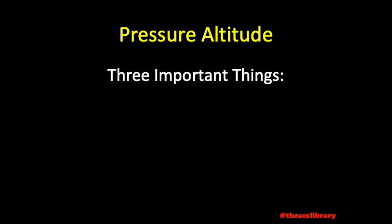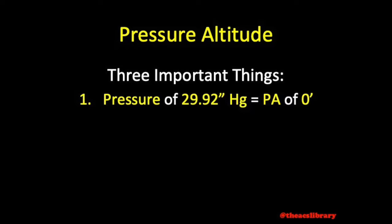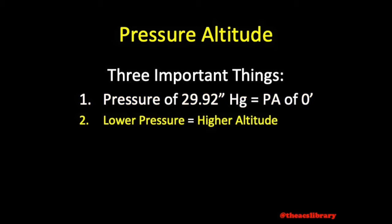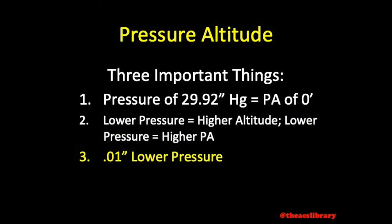There are three important things to keep in mind. First, a current pressure of 29.92 results in a pressure altitude of 0. Second, pressure altitude is the altitude that we would expect to find a pressure setting at. A lower pressure setting is expected at a higher altitude, therefore a lower pressure results in a higher pressure altitude. Every 0.01 inch loss of pressure results in a 10 foot increase in pressure altitude.